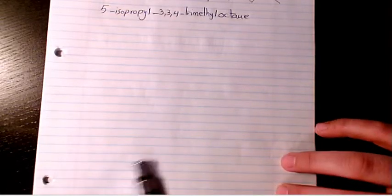In this video I want to show you how to draw 5-isopropyl-3,3,4-trimethyloctane. It ends with -ane so it belongs to the alkane family, and since it's octane we have eight carbon atoms.